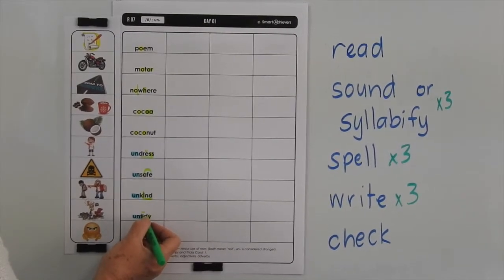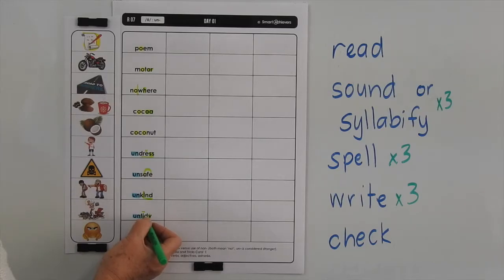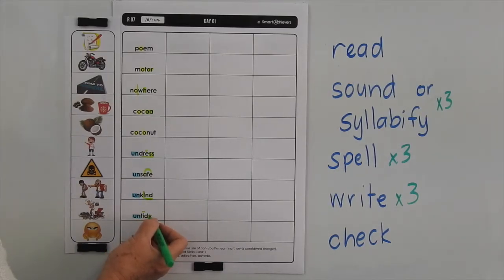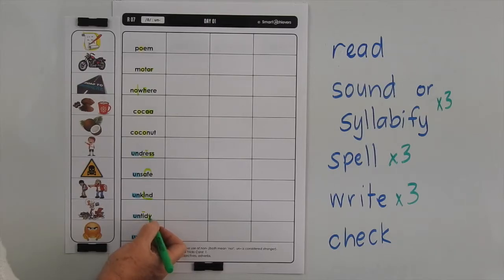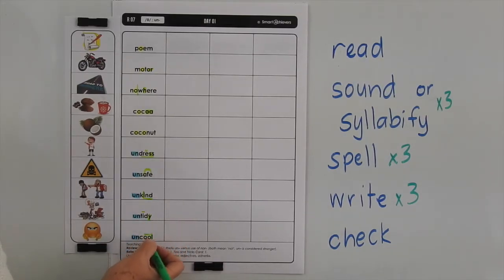Untidy — you've got a long vowel sound in the I there. And you've got the Y making that common E sound at the end of words. And that's the most common form of the E sound at the end of a word.